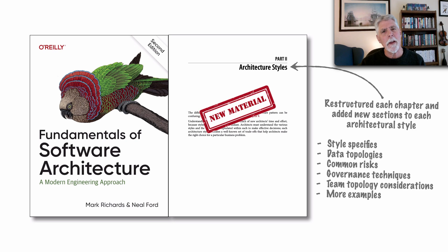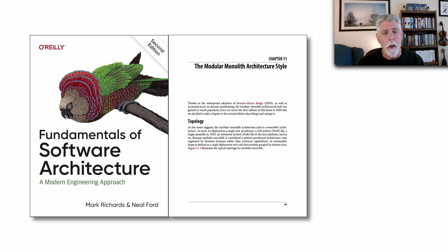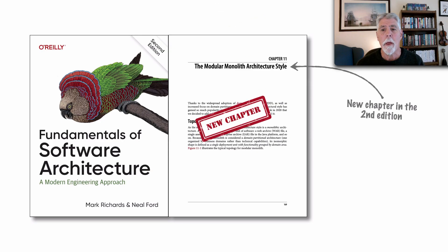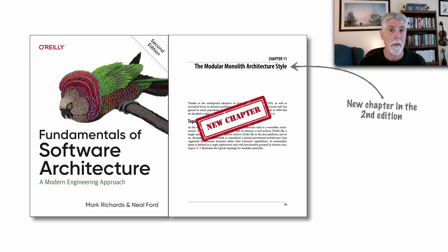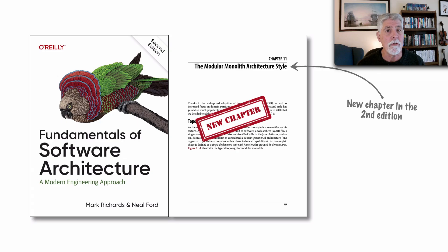Specifically within architecture styles, I want to highlight three aspects. First, we added a new chapter on the modular monolith — a chapter we did not include in the first edition, but given its popularity, it felt like it should really be in this book. So this is a brand new chapter about the modular monolith architecture style.